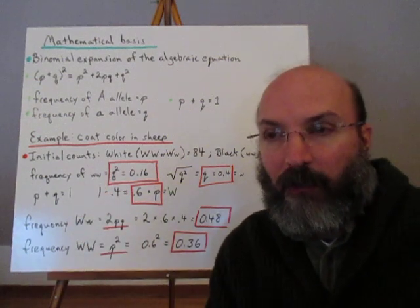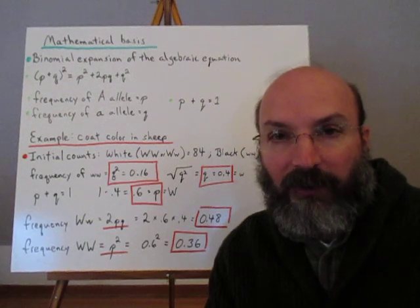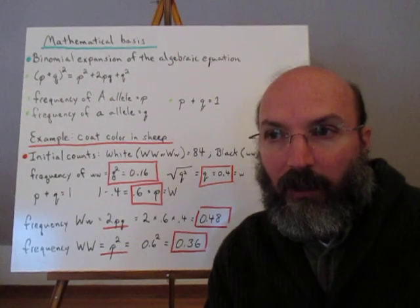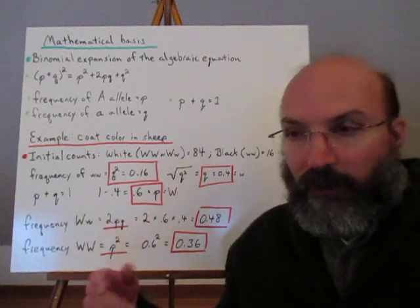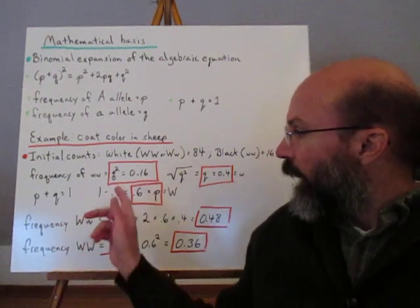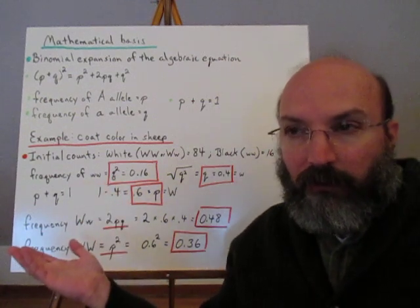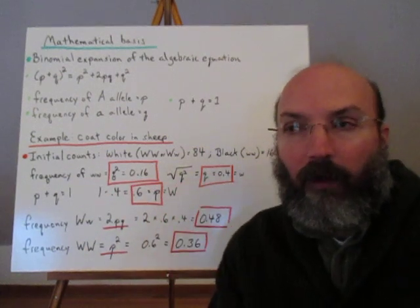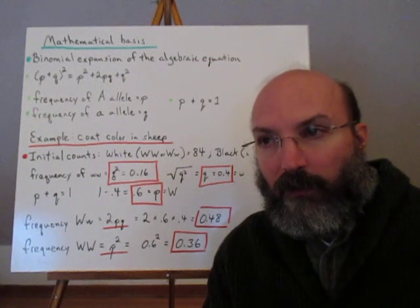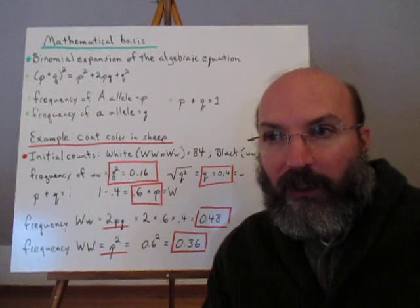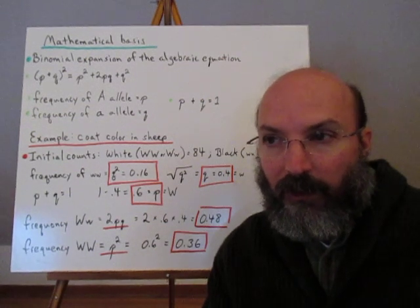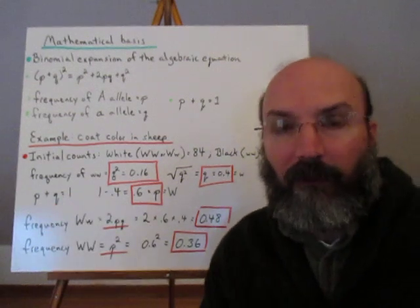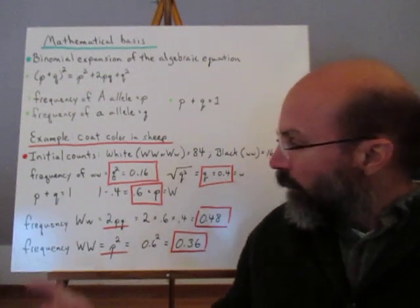The simplest way to approach these problems is to find the frequency of the homozygous recessive individuals. The homozygous recessive black wool sheep number 16 out of 100, so their frequency is 0.16, which represents q². We can then determine that white or black wool color must together represent 100% of the variation, so p + q = 1.